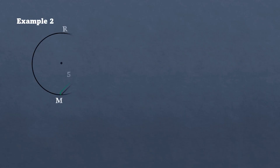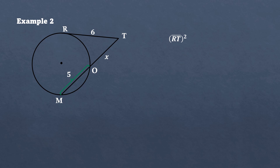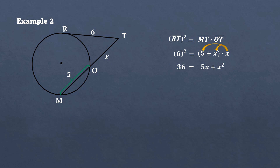Example number two. The given is tangent segment RT squared, equal to the product of secant segment MT multiplied by external secant segment OT. Substituting their values: RT is 6 squared. Since it is a secant, we need to add 5 plus X as its length. For the external secant segment, we have X. Getting their product: 6 squared equals 36, and we need to distribute X inside the parenthesis, giving a product of 5X plus X squared.